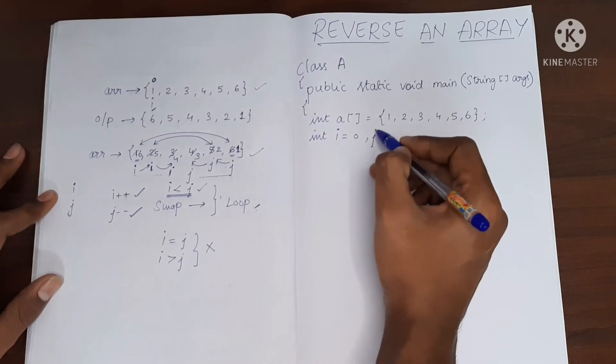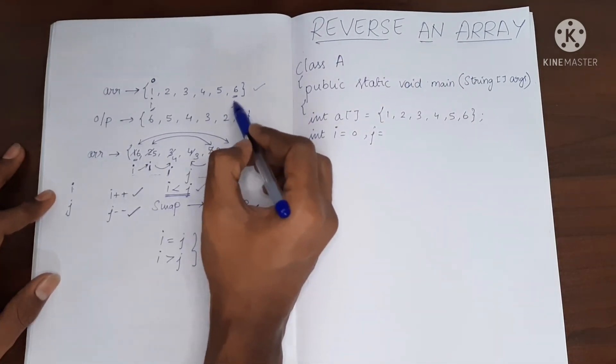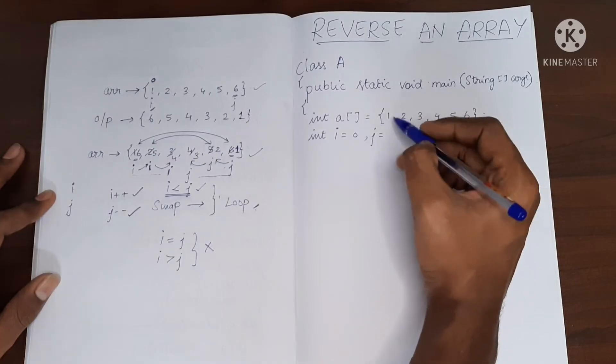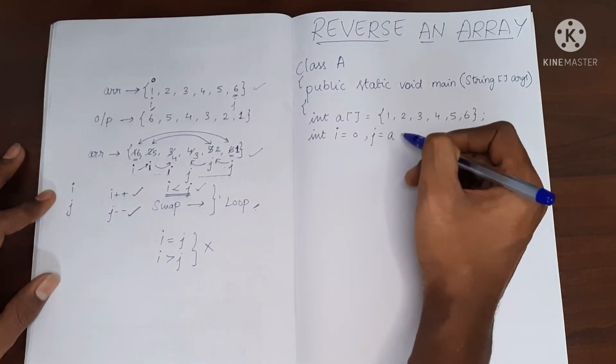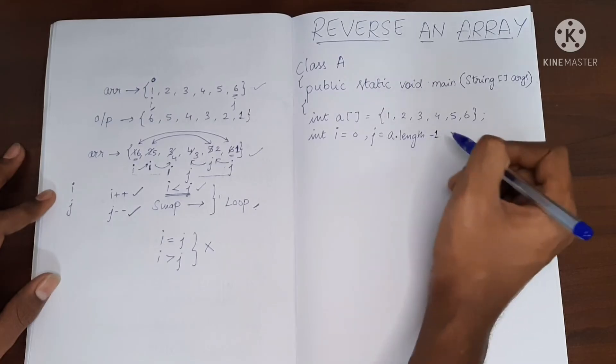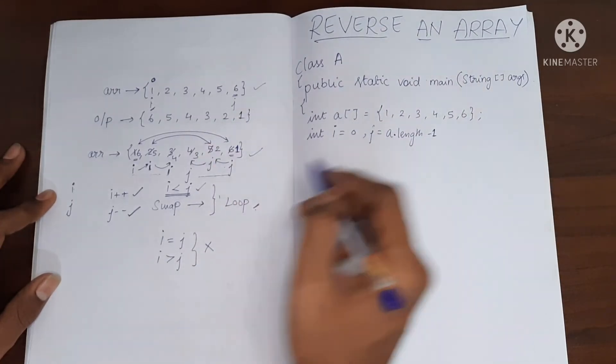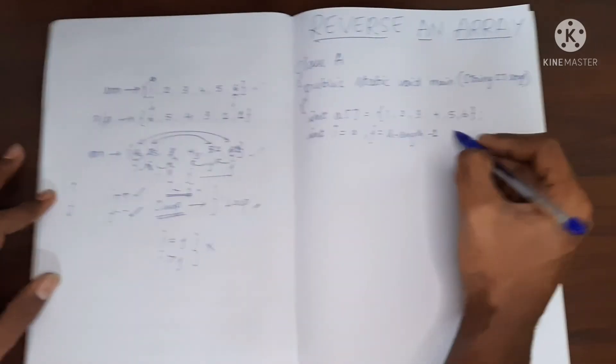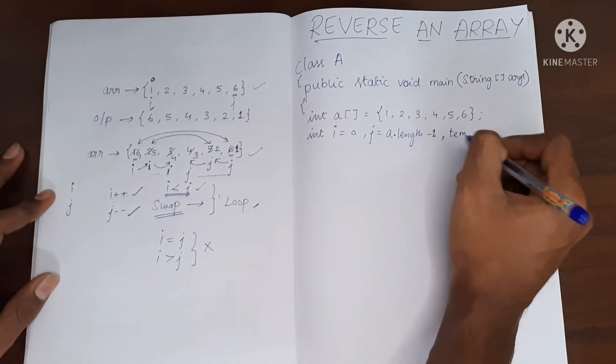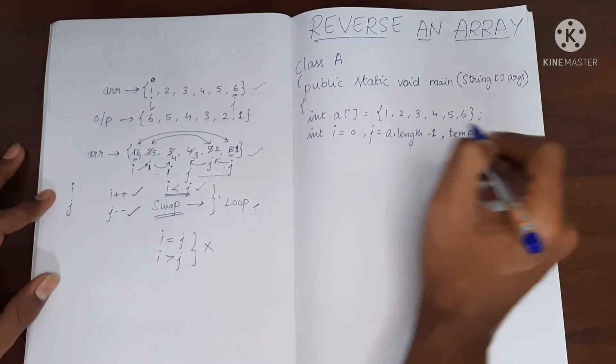Now I need j, and j will be pointing to the last element of the array, and the last element index is array dot length minus one. Now j will be pointing to the last element. Also to swap the values I will use another variable called temp which will be used for swapping.